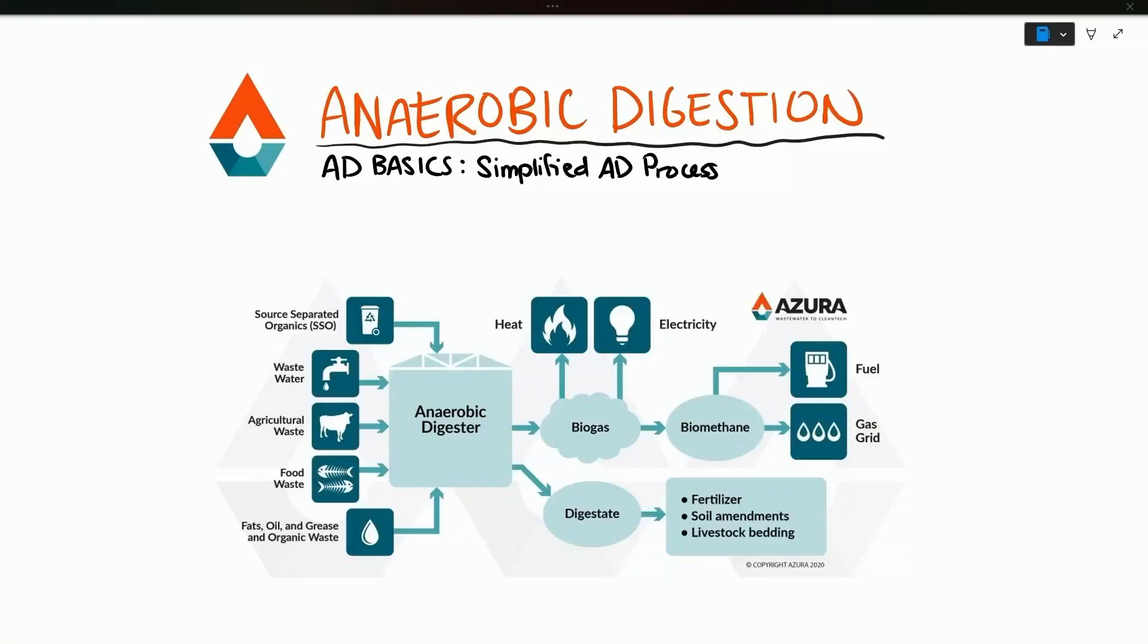Hi everyone, this is a series where I break down the fundamentals of anaerobic digestion and wastewater processing. In this video, we're going to go over the overall process of anaerobic digestion. With anaerobic digestion, we can turn organic waste into useful products like energy and fertilizer while diverting waste from the landfill and reducing greenhouse gas emissions.